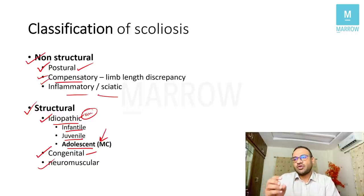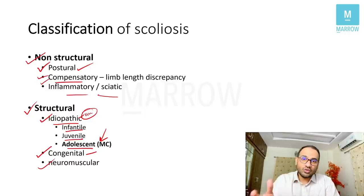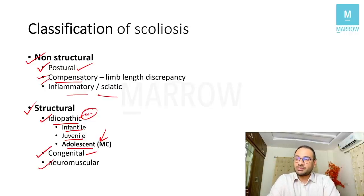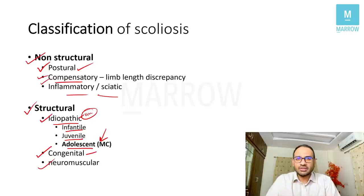Congenital scoliosis involves abnormality in the vertebra since birth. On x-ray you would find that the vertebrae is abnormally developed — maybe half is not developed, maybe half is fused, or both vertebrae are fused. If they do not synthesize completely, you call it a hemivertebra. These are types of congenital abnormalities, and congenital scoliosis was a previously asked AIIMS question.